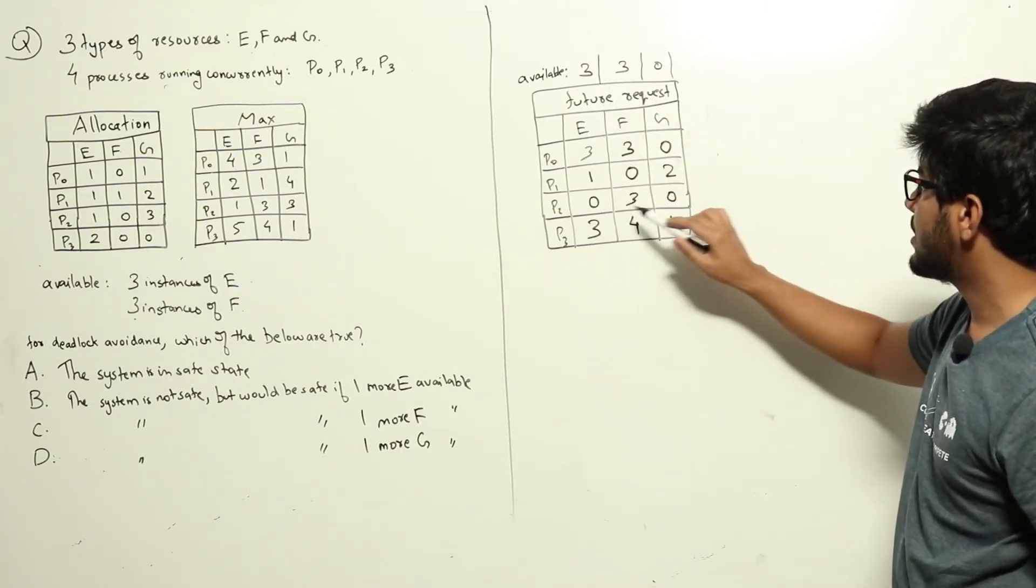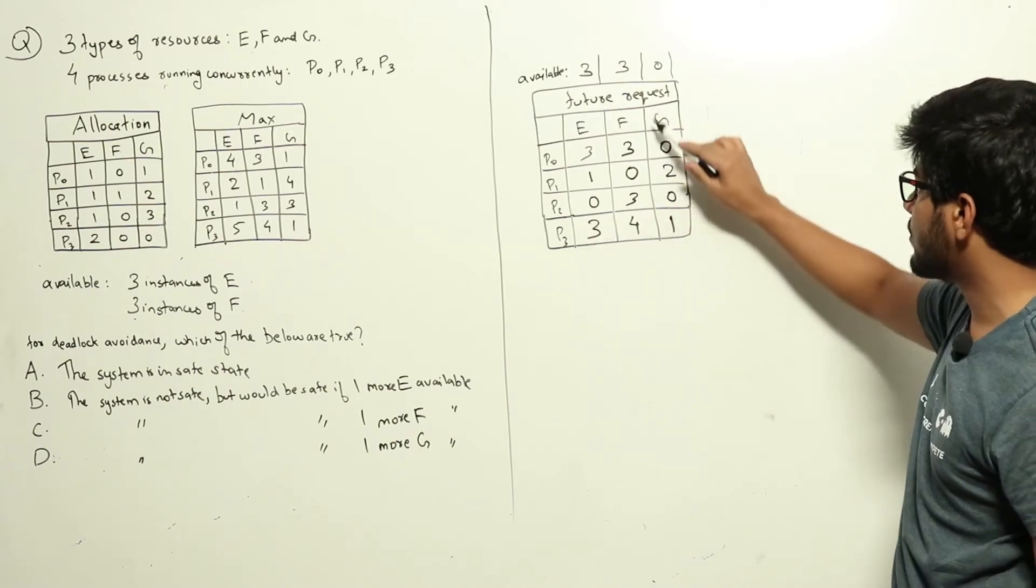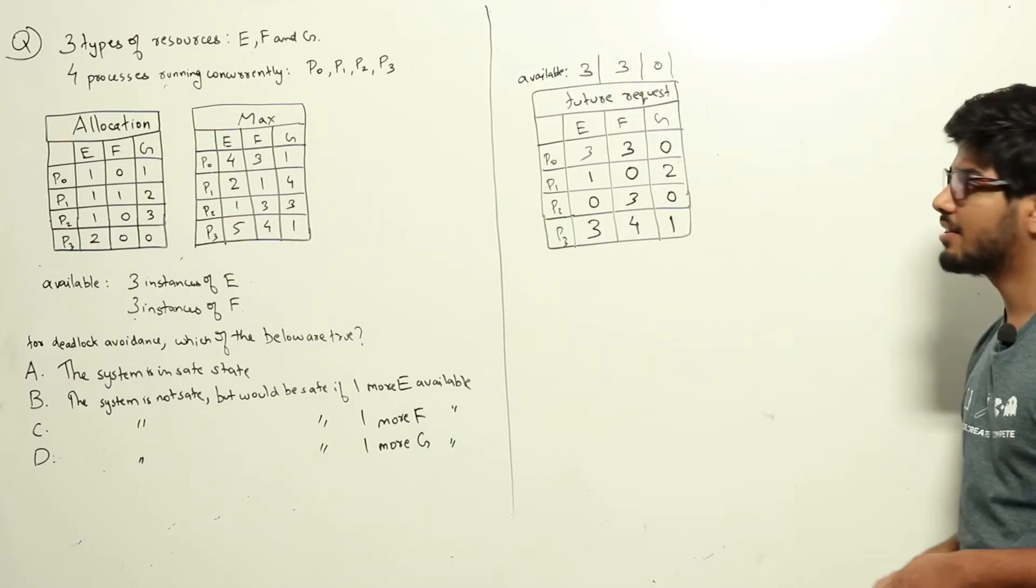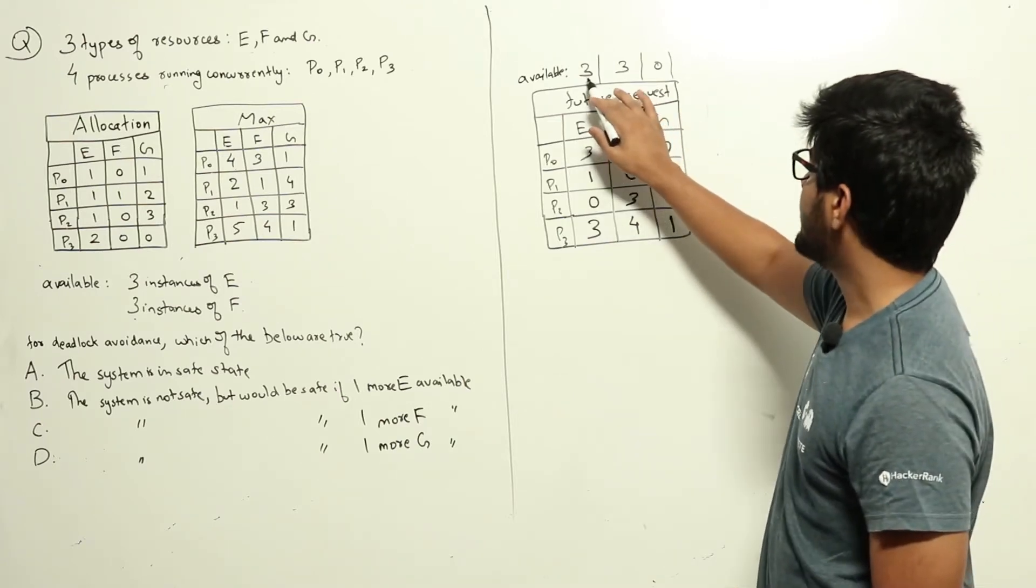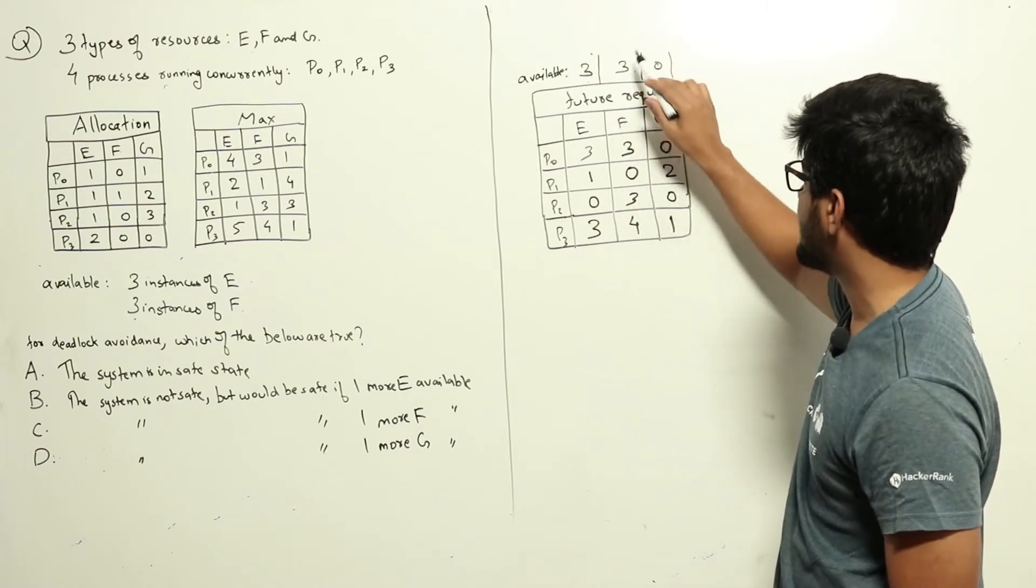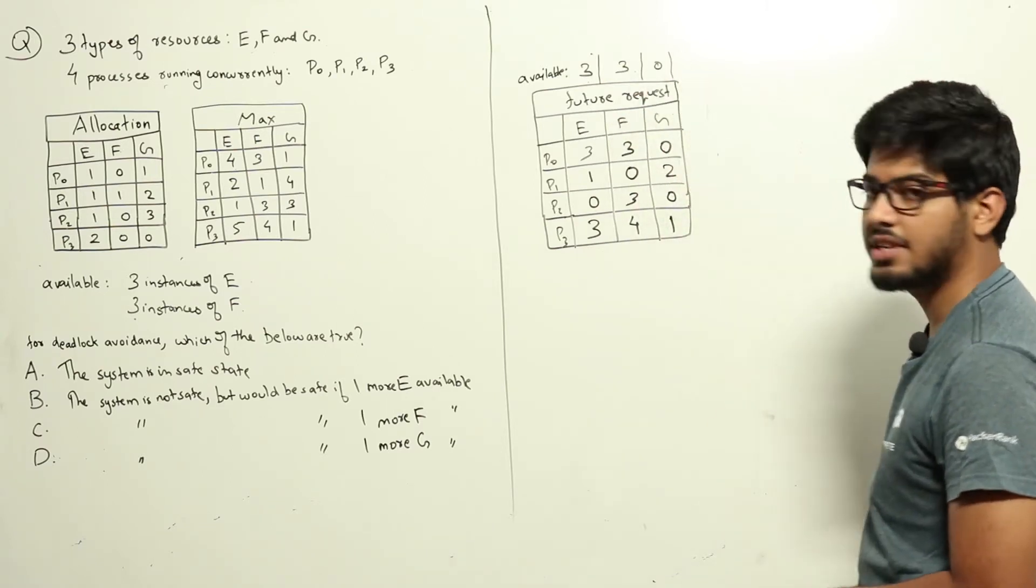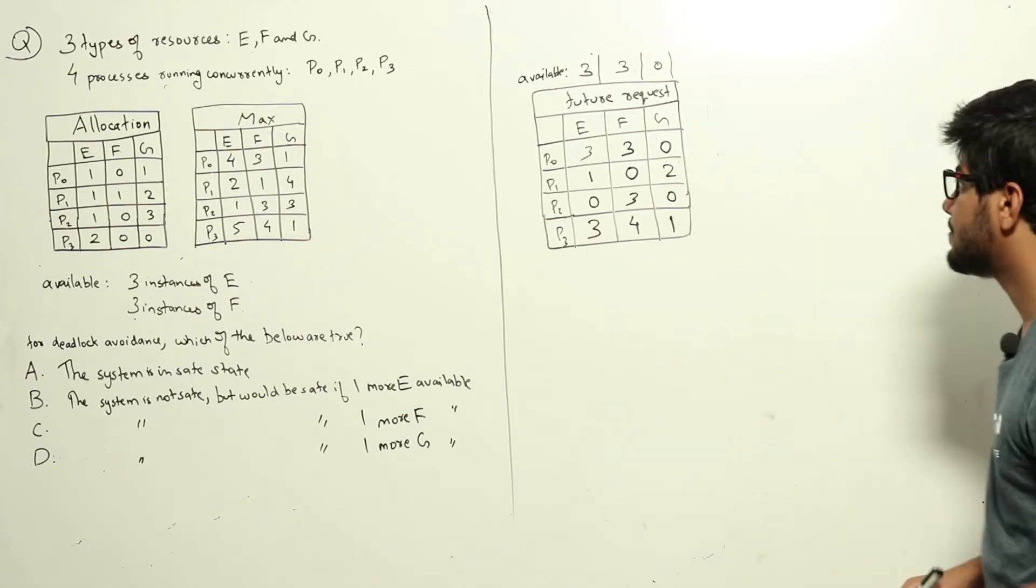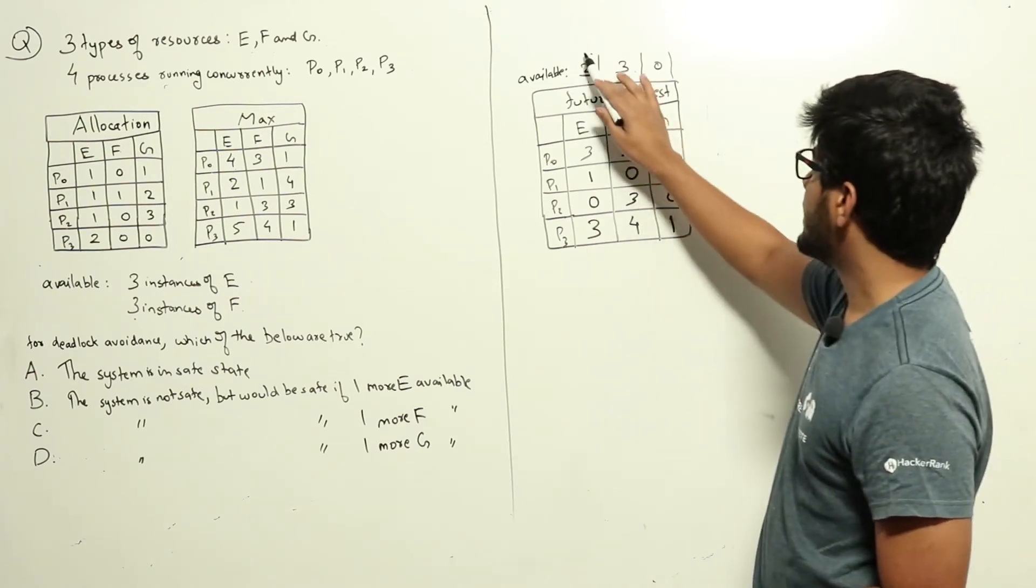A column here means P2 can now request up to three resources of type F additionally. We have three resources of type E available, three resources of type F available, and zero resources of type G available. Now let us see which we can satisfy currently.